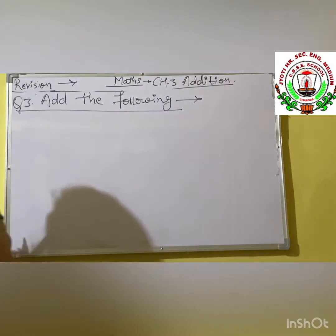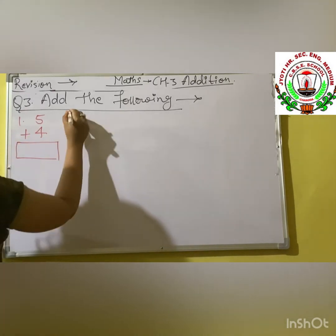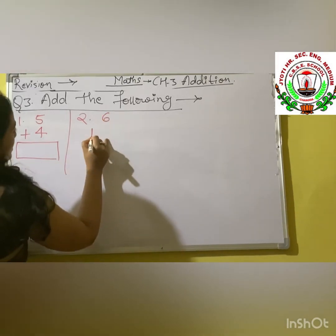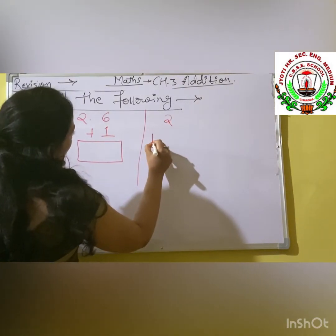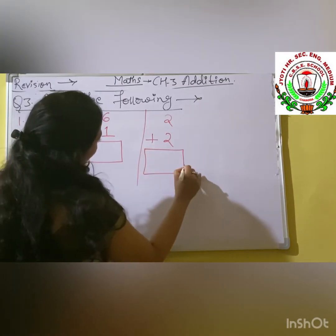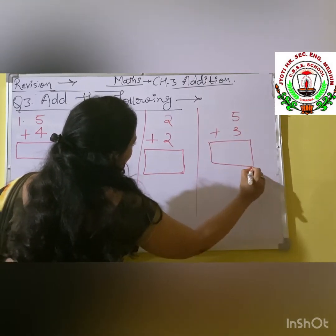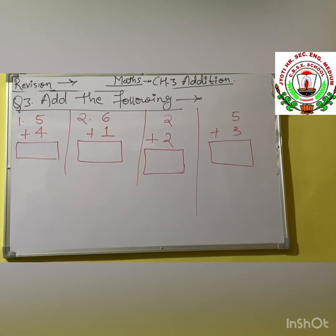Our first one is 5 plus 4. I am writing all the questions together so it will be easy to explain. Also: 6 plus 1, 2 plus 2, and the last one: 5 plus 3. Now first one is 5 plus 4. How will we calculate? How will we do addition? In the same pattern, we will first draw strokes on a standing line.